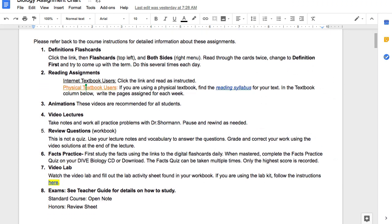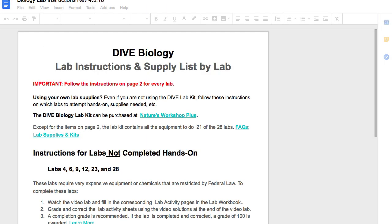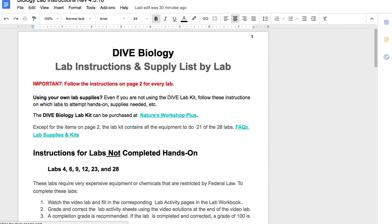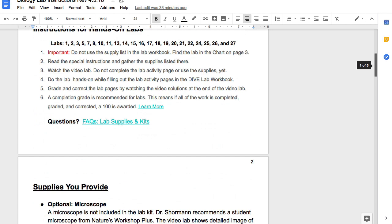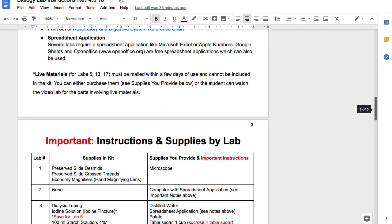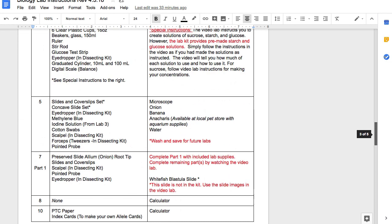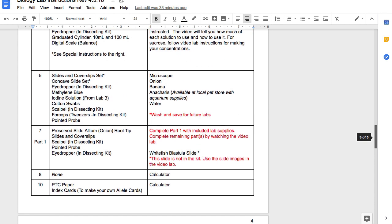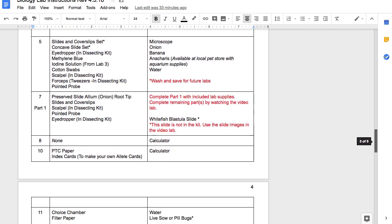For example, take a look at this biology assignment chart. We can just see under video lab there, there's the lab kit instructions. If you are doing it hands on, you can just click on that. That'll open into Dive Biology Lab Instructions. And so you just open that lab instructions up and you can scroll through there and see the list of materials and lab by lab, what materials are supplied in the lab kit, what materials you need to provide.